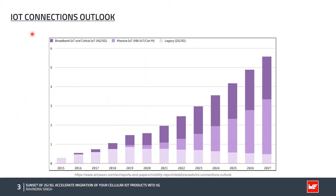As per this Ericsson report, this is the IoT connections outlook. As you can see, in the past, 2G and 3G connections grew a lot. But from 2022 onwards, 2G and 3G connections are either stagnant or decreasing drastically. On the other hand, new technologies like NB-IoT and Cat-M are increasing and are expected to grow exponentially in future. The same goes with LTE and 5G technologies, mainly for broadband IoT and critical IoT — 4G and 5G are also expected to grow in the near future.